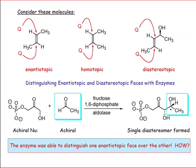An interesting example of where topic relationships between faces becomes important is the enzyme-catalyzed example at the bottom of this slide. An achiral nucleophile and an achiral electrophile are combined in the presence of a chiral enzyme, an aldolase, to produce an aldol product. Notice that only a single diastereomer is formed from this reaction.